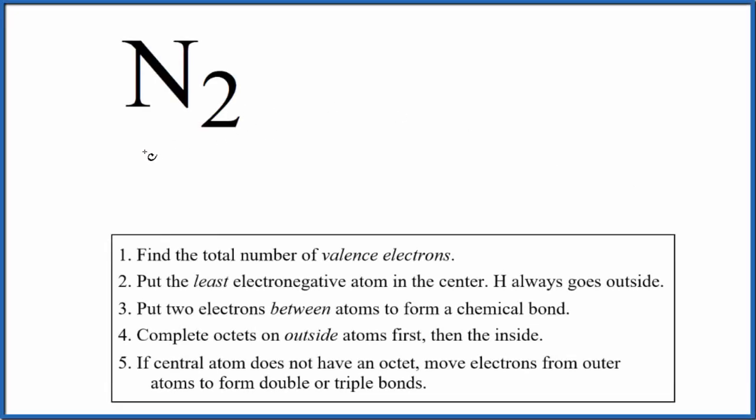Let's draw the Lewis structure for N2. This is diatomic nitrogen, sometimes just called nitrogen gas. The first thing we do with Lewis structures, we count the total number of valence electrons.